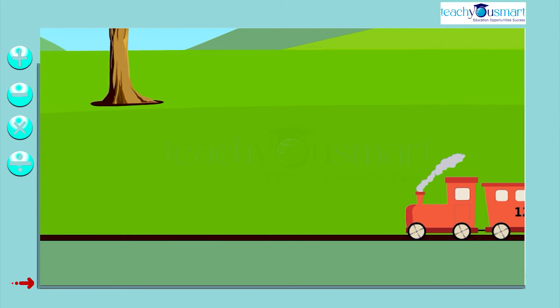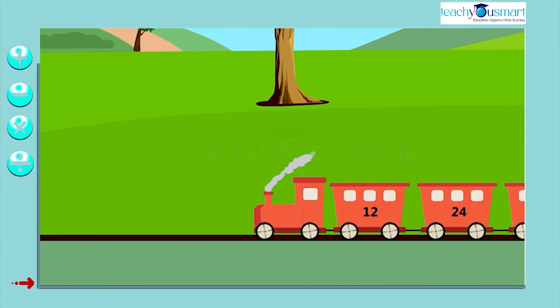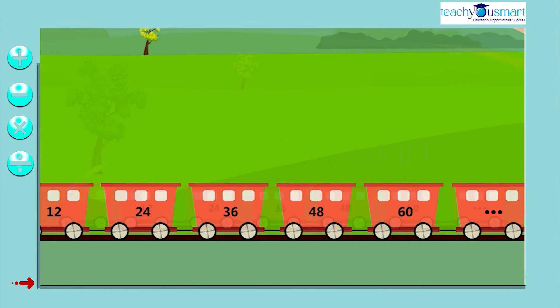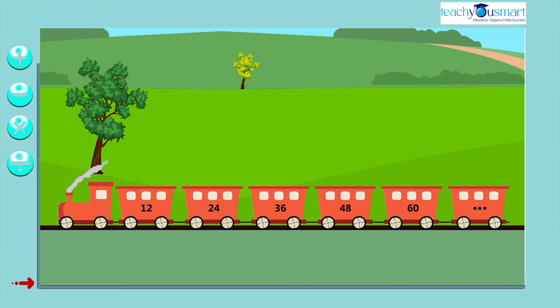We know that the multiples of 12 are 12, 24, 36, 48, etc. It is clear that each consecutive number differs by 12.